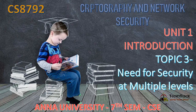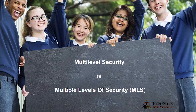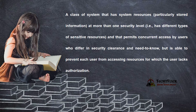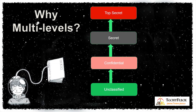The third topic is the need for security at multiple levels — either multi-level security or multiple levels of security, also called MLS. One system can have more than one security level. In multi-level security, data is classified as unclassified, confidential, secret, or top secret. The goal is to secure data across these levels — that is the security level concept.